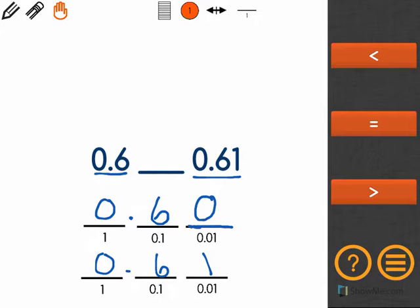Now that we have this, we remember we start at the left to compare and we move across. Those are the same numbers so we have to move down to the tenths place. Again the same number, and here we have a 1 and a 0. 1 being greater than 0, which means that 0.61 is greater than 0.6.